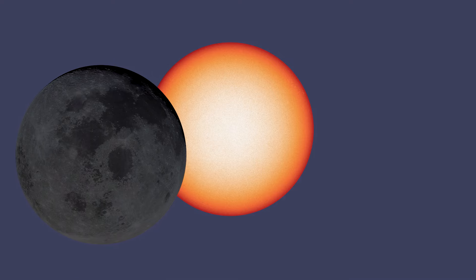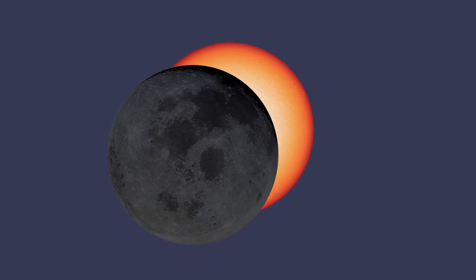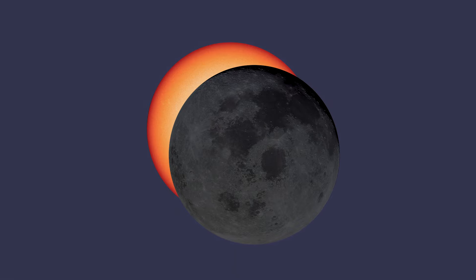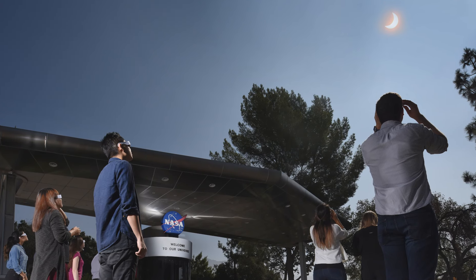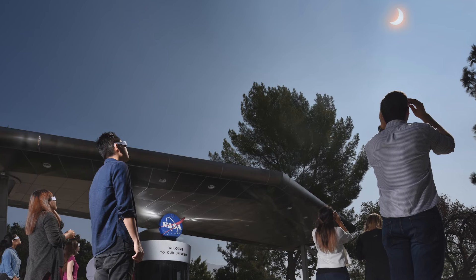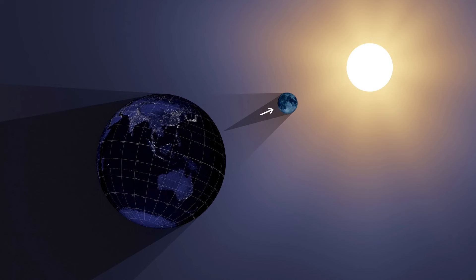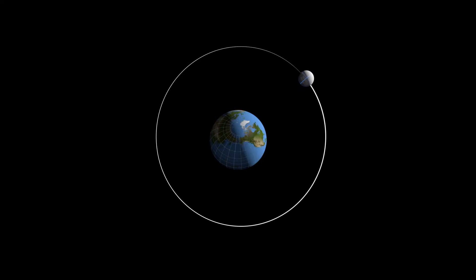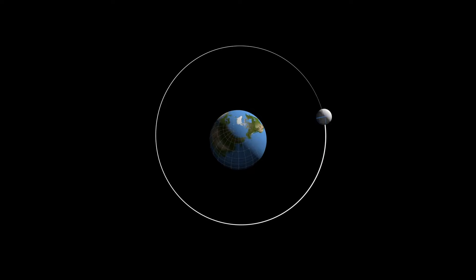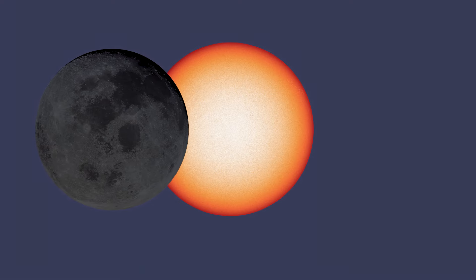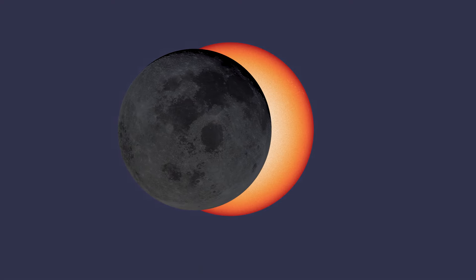A partial eclipse occurs when the Moon is not exactly in line with the Earth and Sun, and the Moon only partially obscures the Sun. From our perspective, this looks like the Moon has taken a bite out of the Sun. An annular solar eclipse happens when the Moon passes between the Sun and Earth but is a little further away. Since the Moon isn't always the same distance from Earth, when it's further away it appears smaller than the Sun and doesn't completely block it out. During annularity, the Moon appears as a dark disk on top of a larger, bright disk, creating what looks like a ring of fire around the Moon.